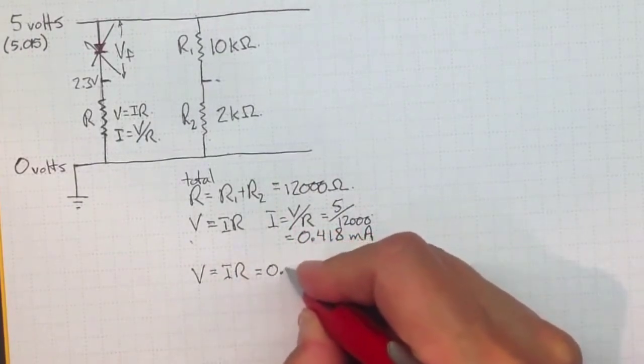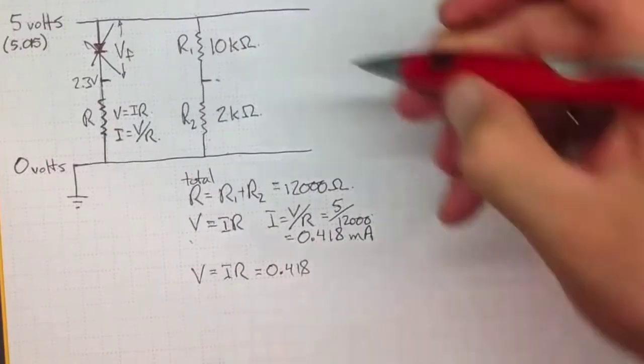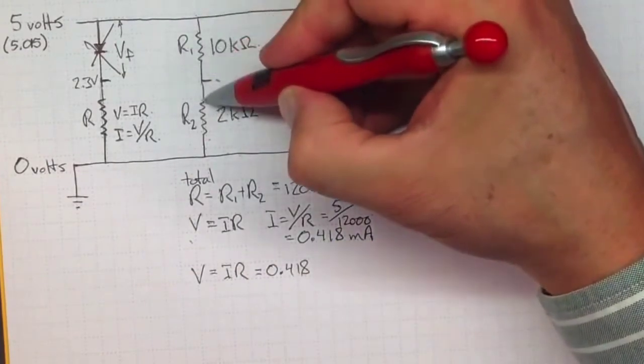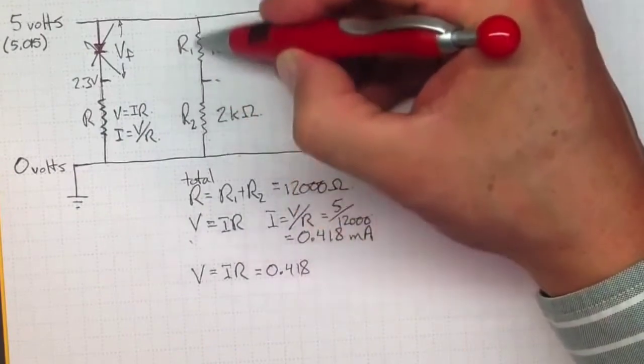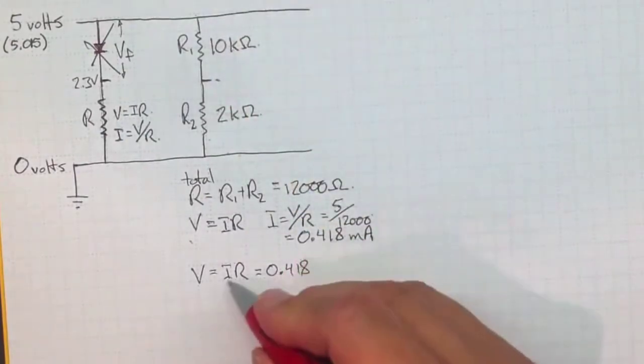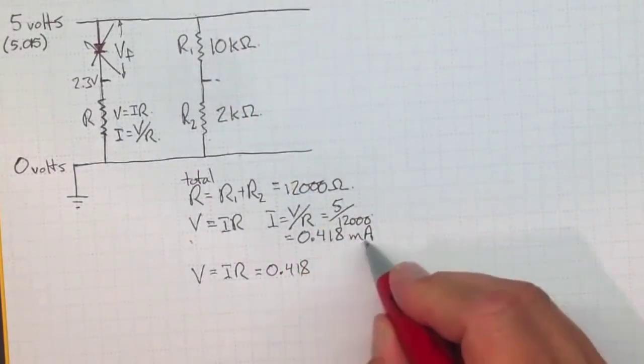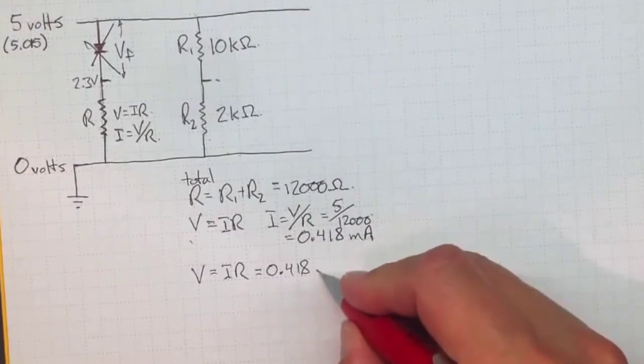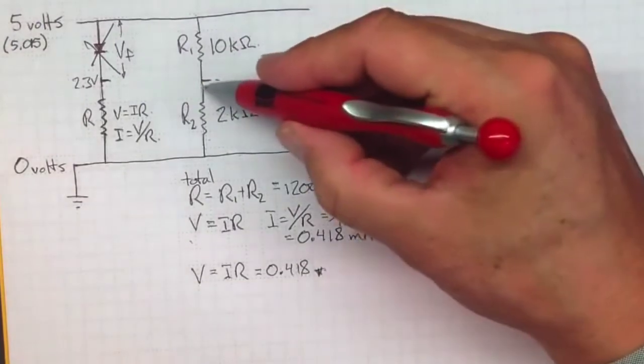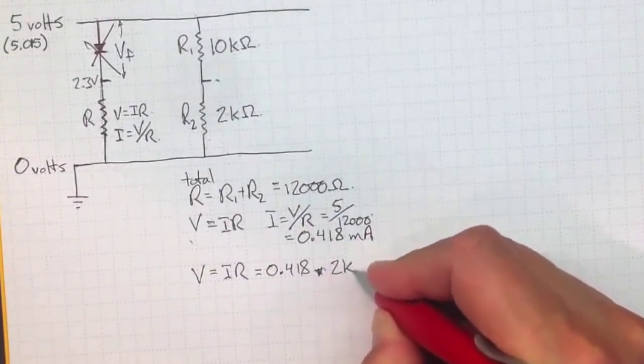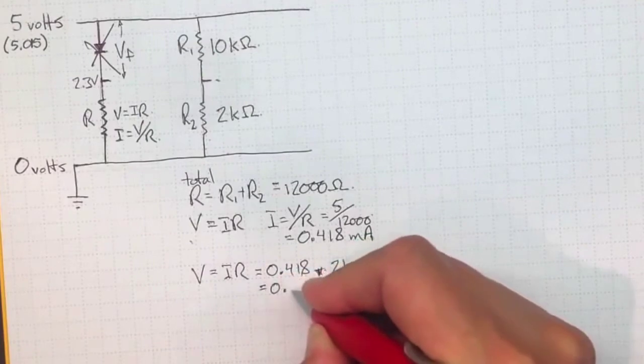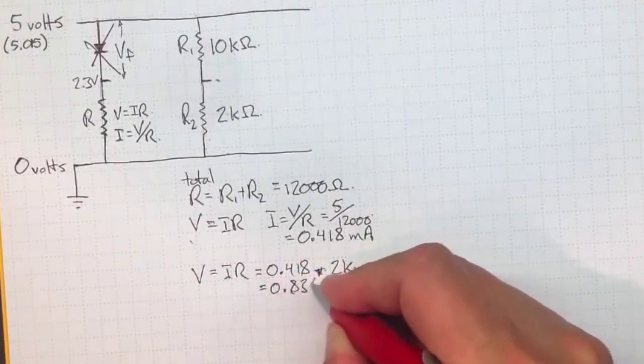If I is 0.418, because the current that flows through here is also the same as the current that flows through here, is the current through the entire combined circuit. So 0.418 milliamps times 2,000 ohms gives me 0.836.